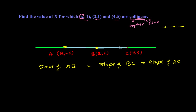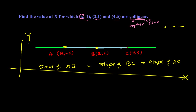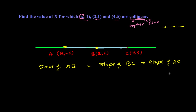All these lines make the same angle with the positive direction of the x-axis, which is why all slopes are equal. Now let's find the slope of AB using the formula: slope = (y2 - y1) / (x2 - x1). So slope of AB = (1 - (-1)) / (2 - x) = 2 / (2 - x).